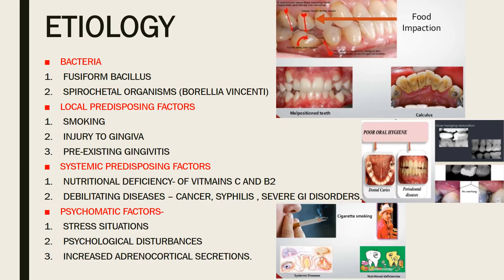The etiology includes bacteria, local predisposing factors, systemic predisposing factors, and psychosomatic factors. The bacteria that cause ANUG are fusiform bacilli and spirochetal organisms — these are the main causative organisms.